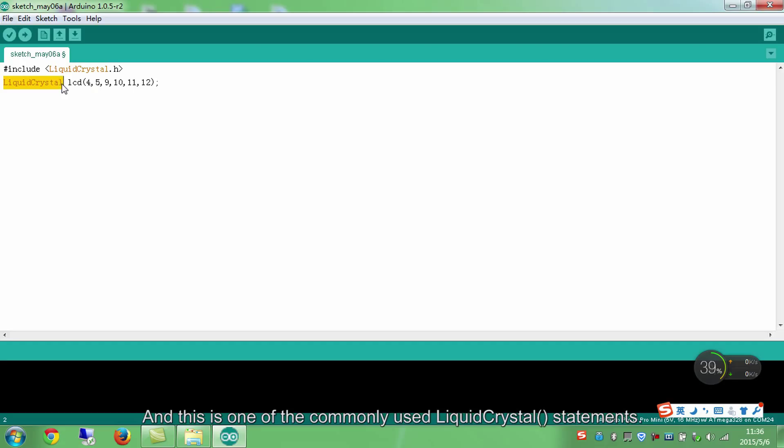And this is one of the commonly used liquid crystal statements. RS here is the number of the UNO pin that is connected to the RS pin on the LCD. RW the number of the UNO pin that is connected to the RW pin on the LCD. So this function means to connect RS to pin 4, E which is enabled to pin 5 and D4 to D7 is hooked up to pin 10 to 13 respectively.